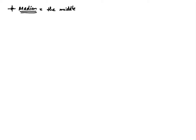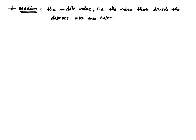Let's now talk about another measure of location, which is the median. The median is literally the middle value — the value that divides the data set into two halves: the lower half and the upper half.